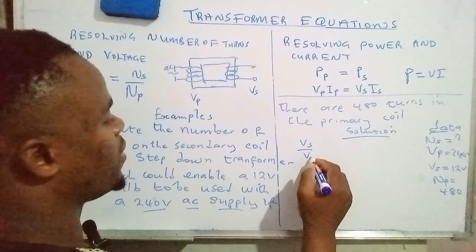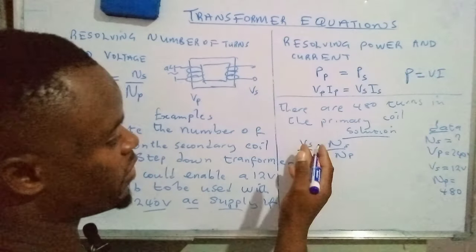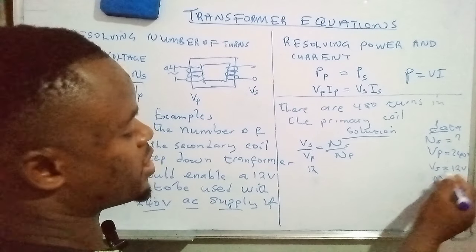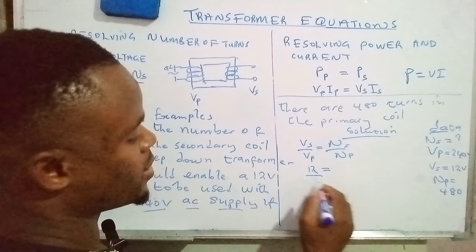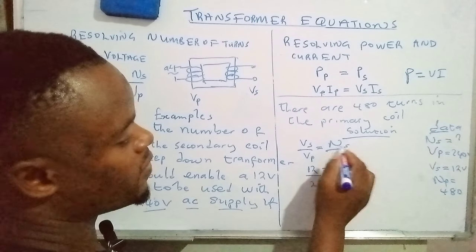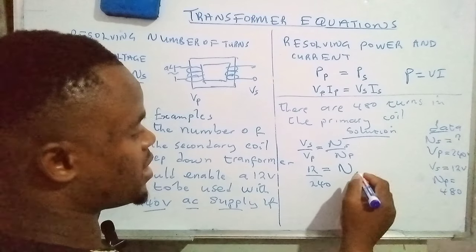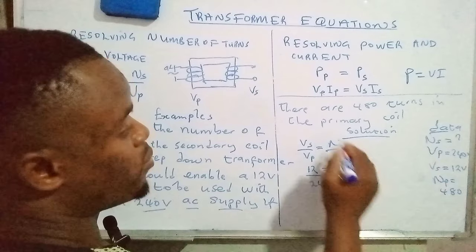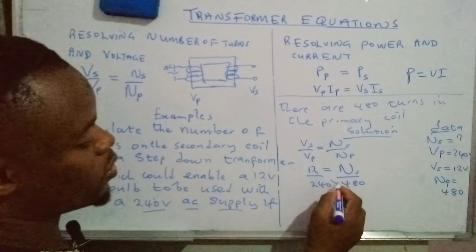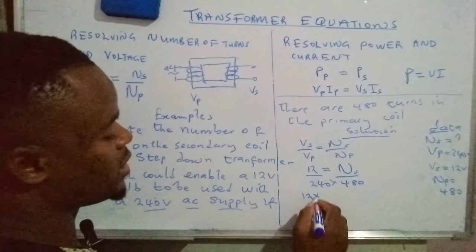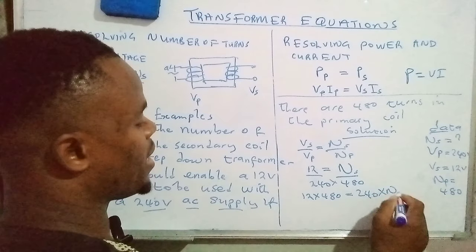We write the equation: VS over VP equals NS over NP. Plugging in the values: 12 over 240 equals NS over 480. We cross-multiply to get rid of the fractions, giving us 12 times 480 equals 240 times NS.